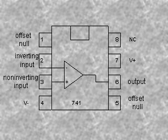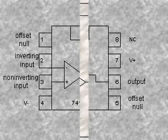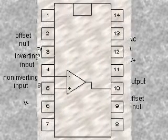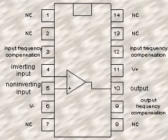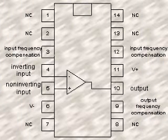Op-amp ICs are available in a variety of packaging styles. The 8-pin DIP housing shown in this figure is probably the most widely used. Sometimes a 14-pin dual-inline package is used, as shown. Some op-amp ICs are available in an 8-pin round can arrangement.